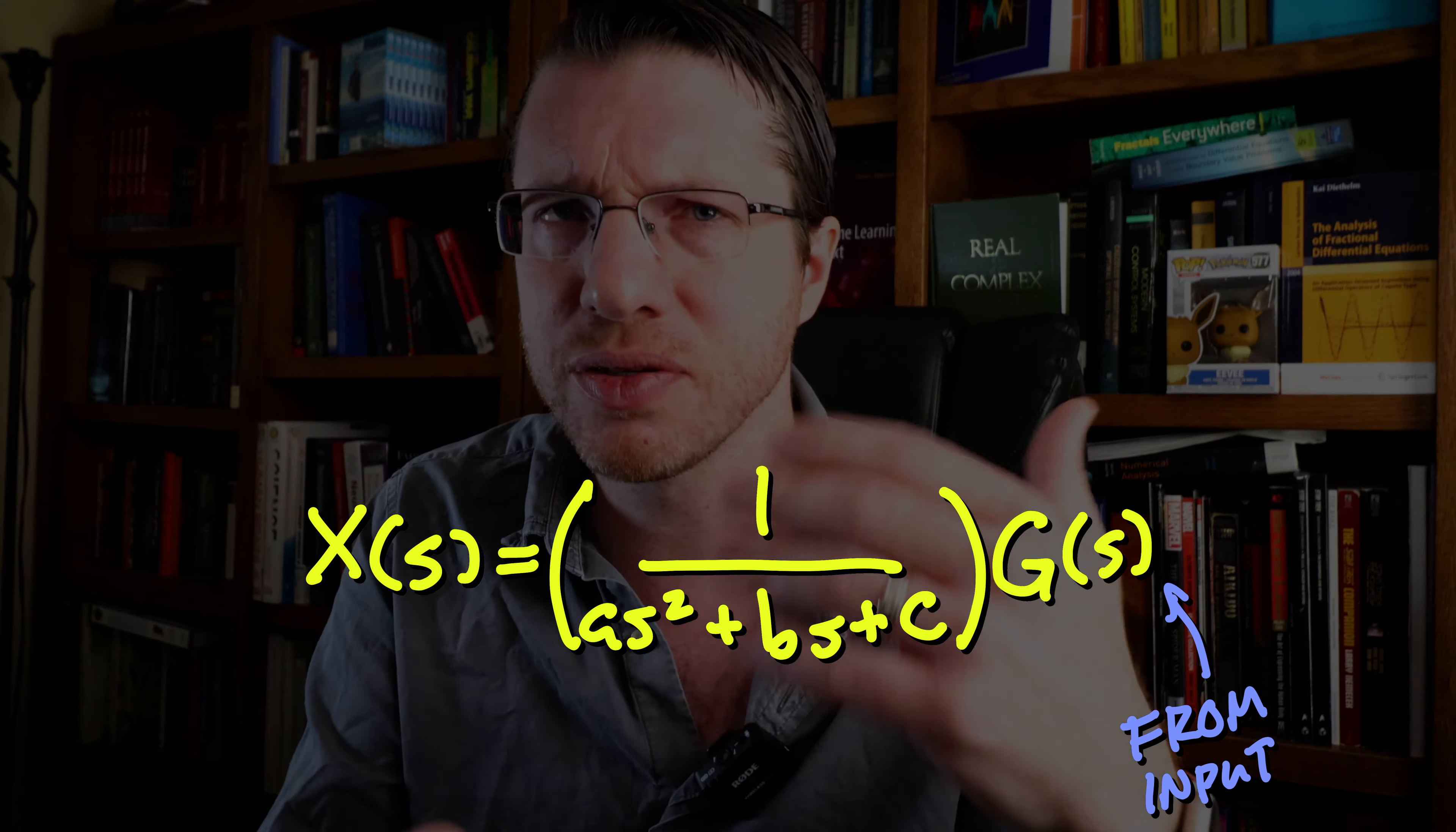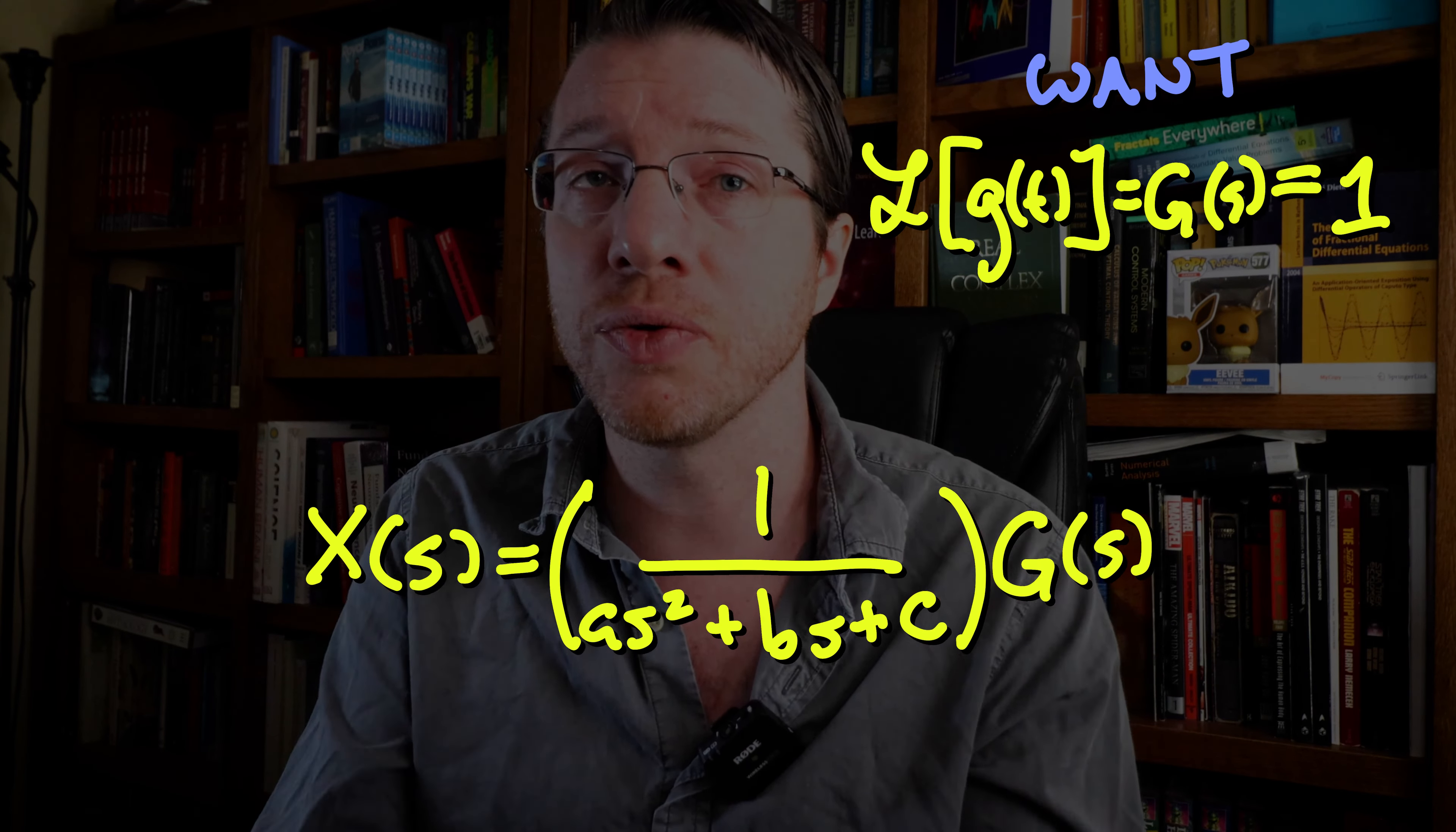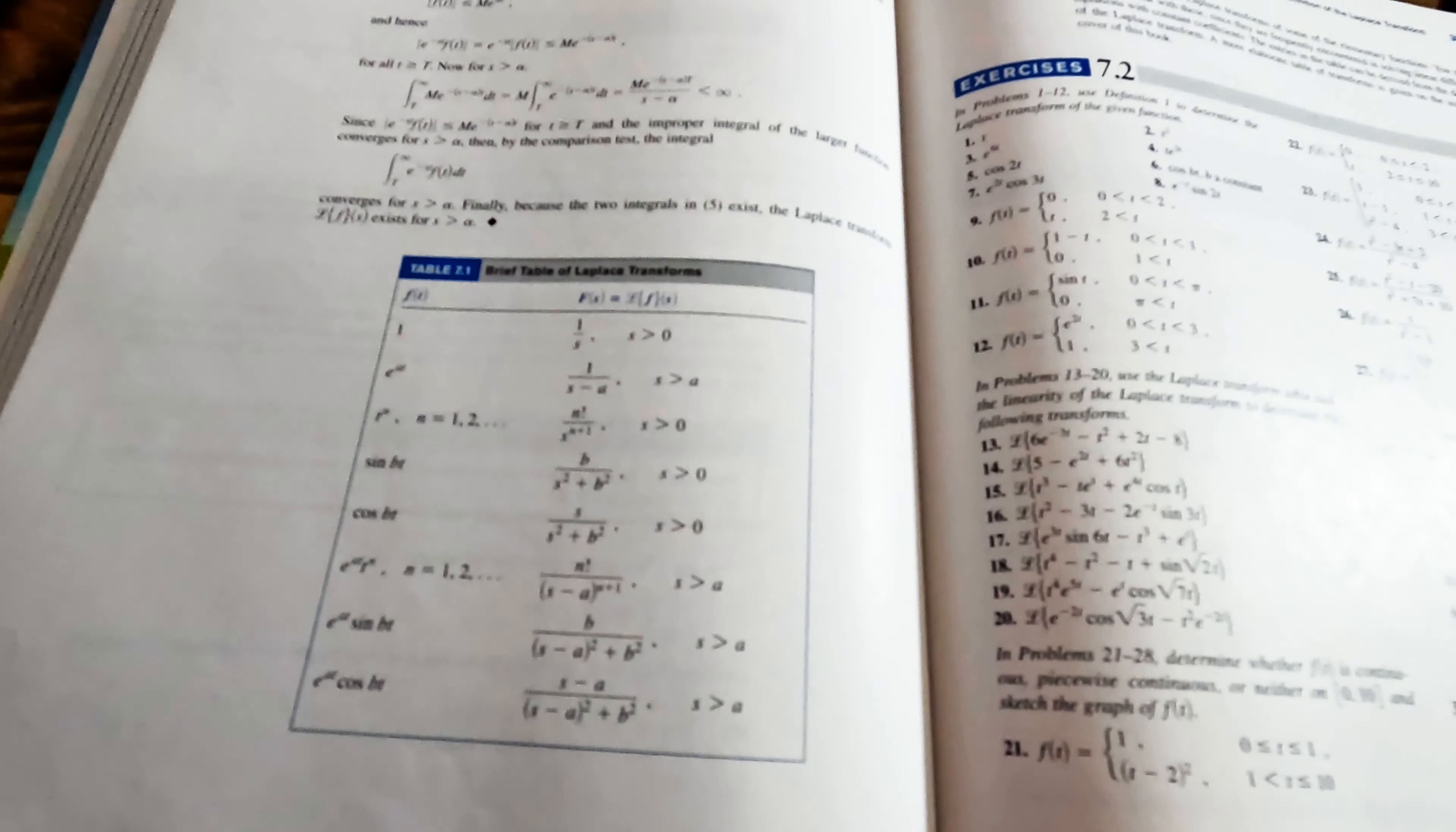So how would we isolate this transfer function? We would select a g of t that gives g of s is equal to one. But if we look at this table, we see that we don't have a function that gives us one for a Laplace transform. And indeed, no function does.